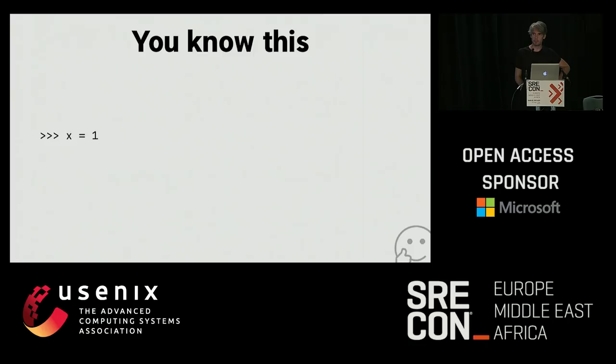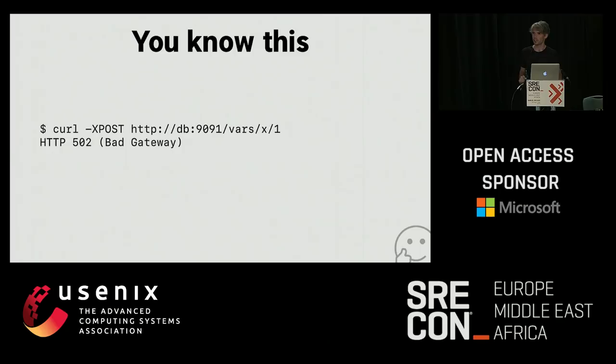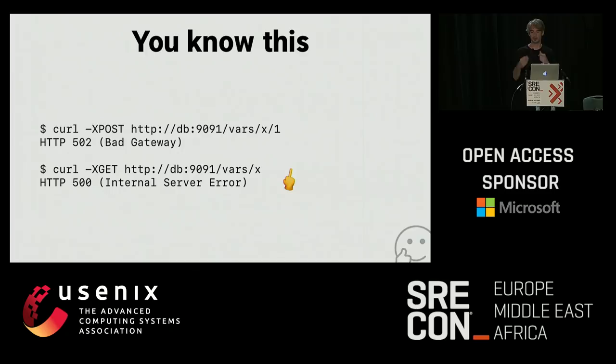I think we all know this intuitively. If we load up our Python interpreter and type something in, we get the expected result. But in distributed systems, the equivalent of setting X to one gives you some error code back. Then you try to get the value and that doesn't work either. We don't have the joy of an interpreter that gives us back what we put in — we have to understand failure in a much more complex and subtle way.